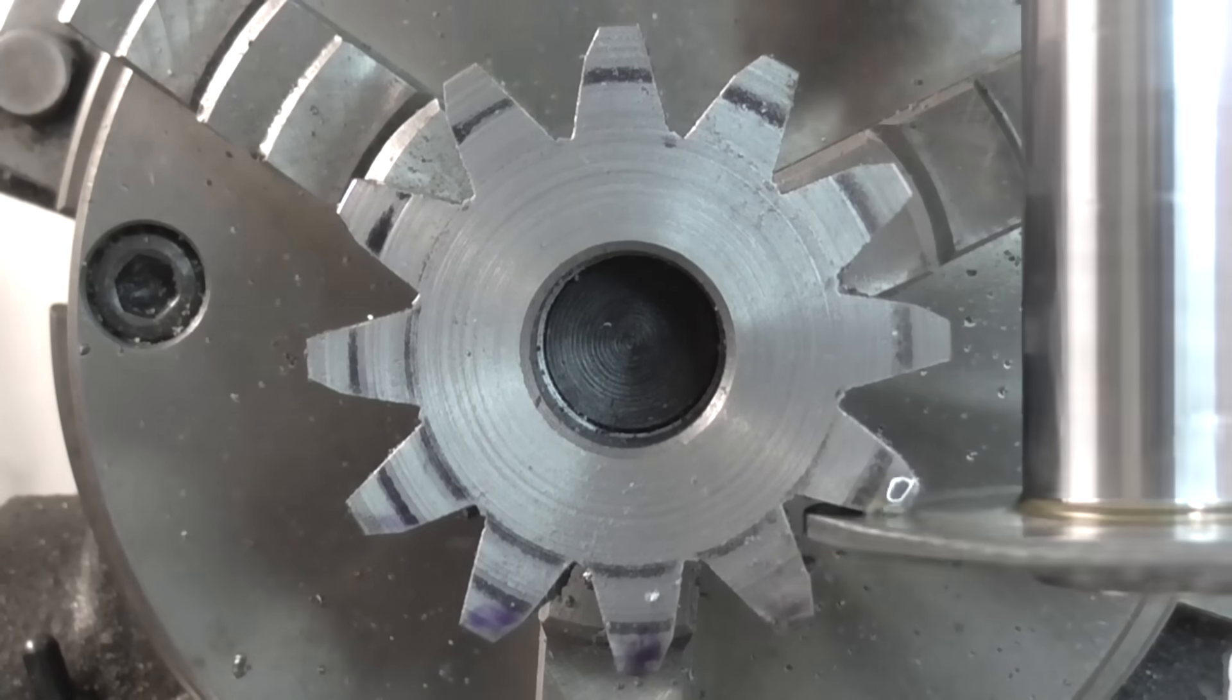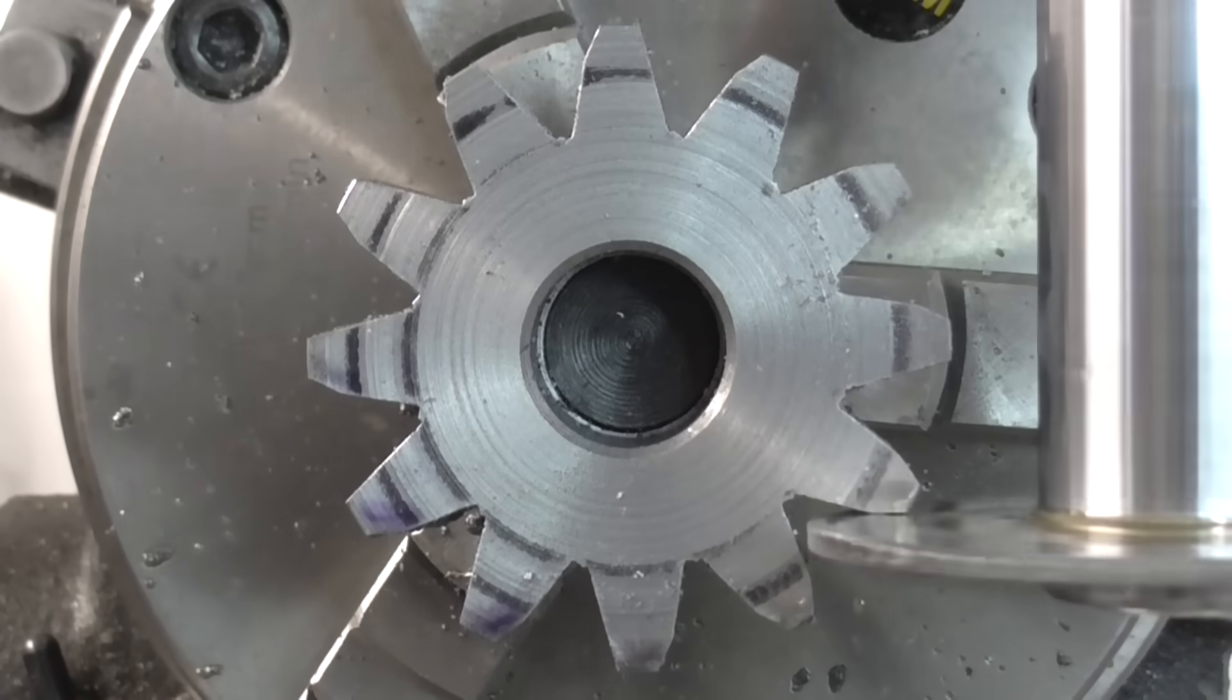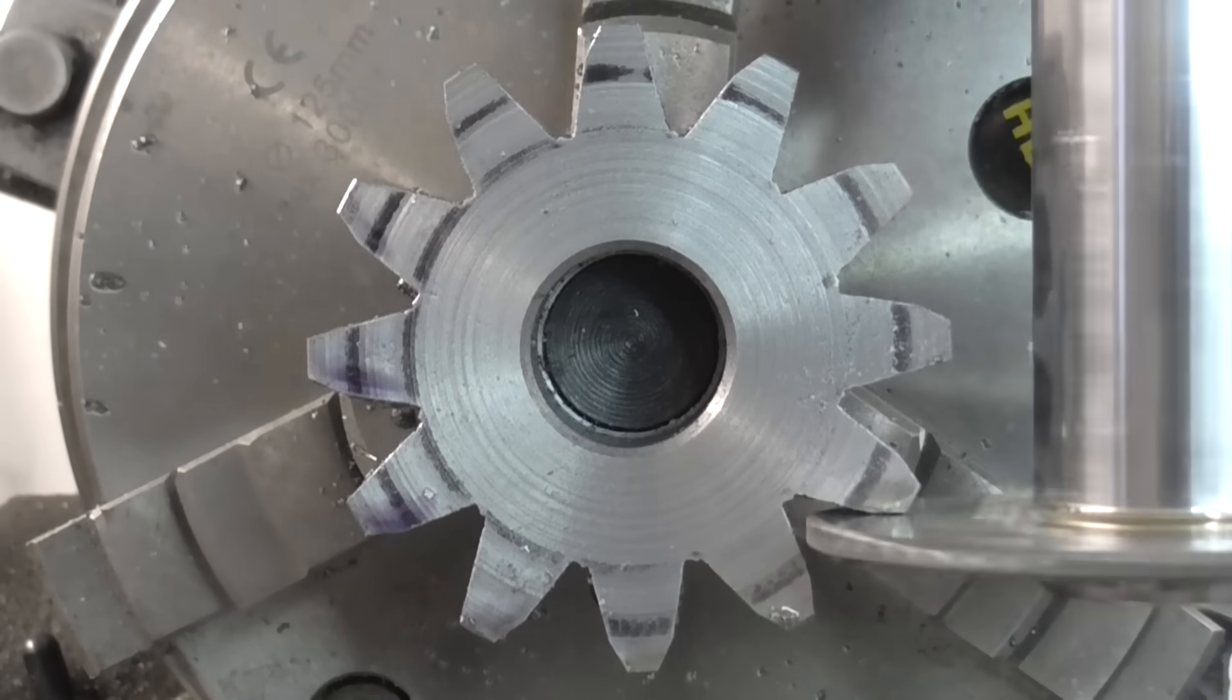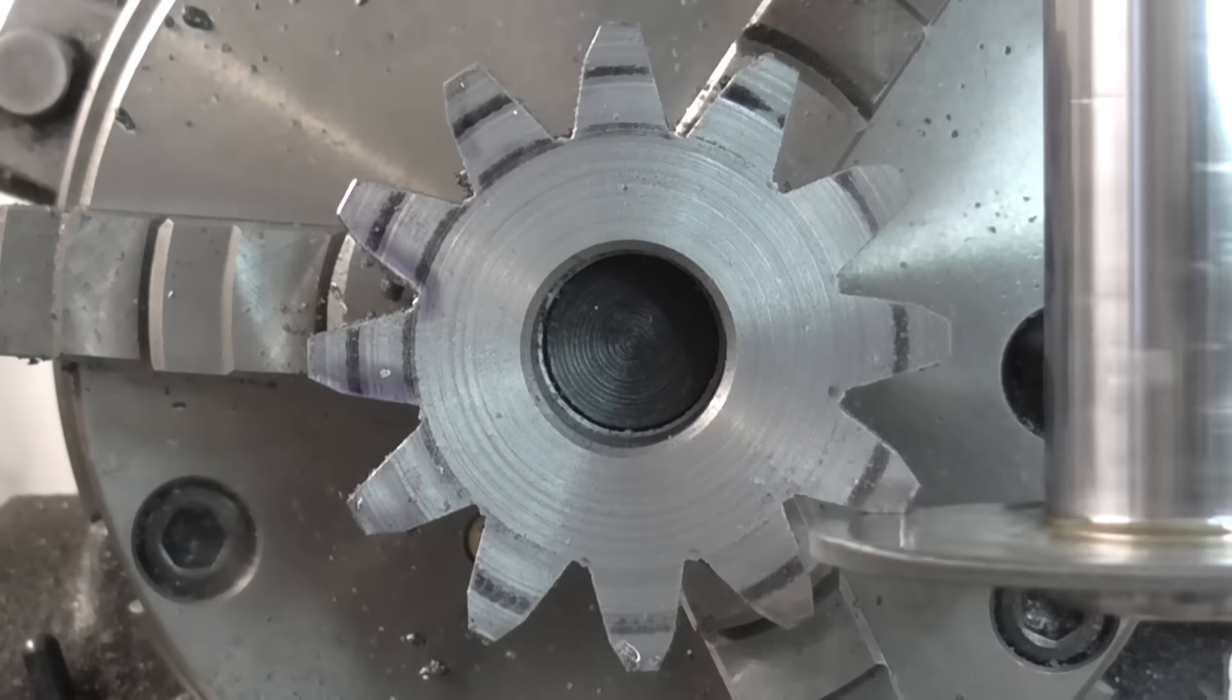Again, to cut the other side of the teeth, I just lower the saw an equal amount below the centre line and rotate the gear to the correct starting position. Then take cuts at 30 degree intervals.